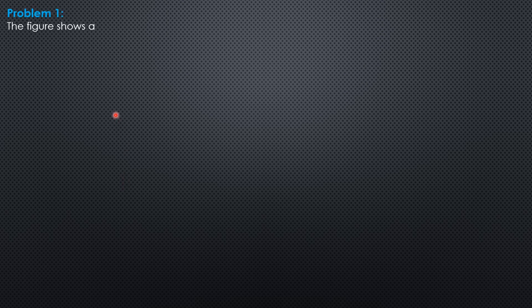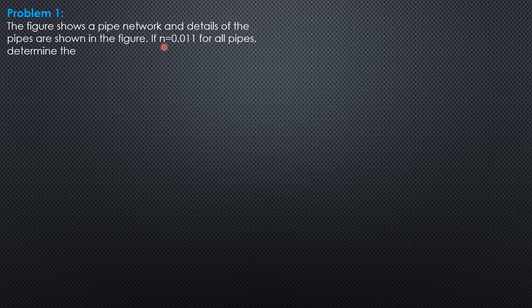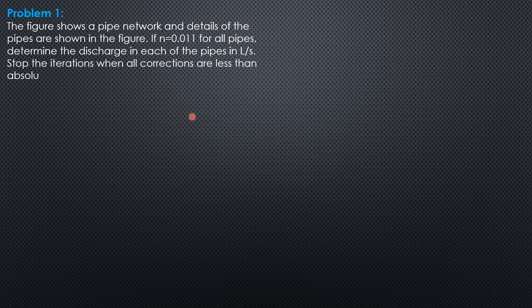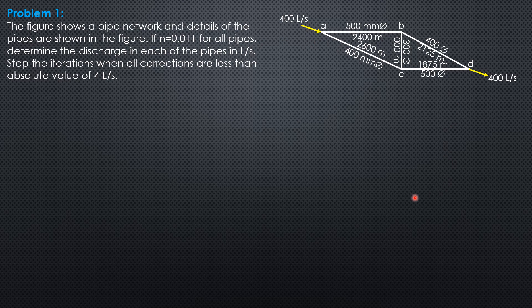Example 1 on pipe networks. The figure shows a pipe network with details of the pipes given. The roughness coefficient is 0.011 for all pipes. Determine the discharge in each pipe in liters per second. Stop the iterations when all corrections are less than the absolute value of 4 liters per second or 0.004 cubic meters per second.